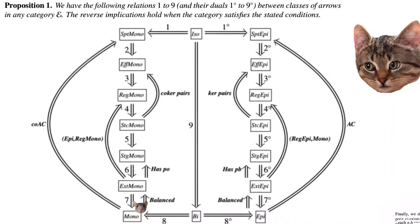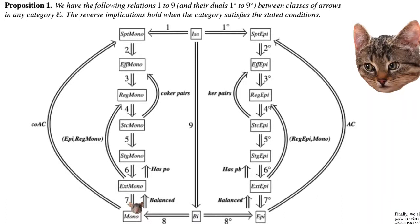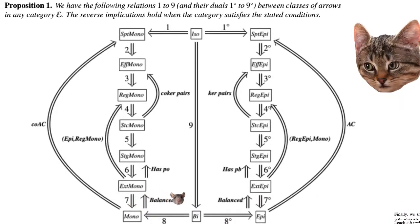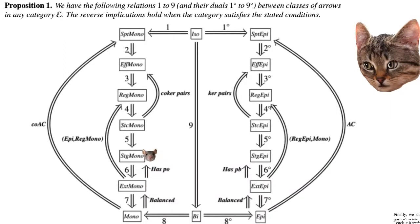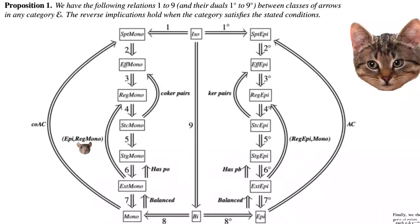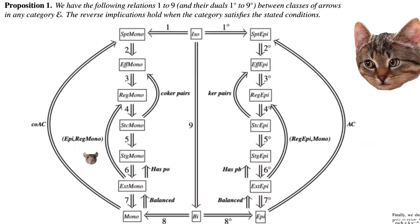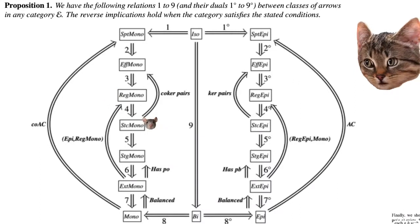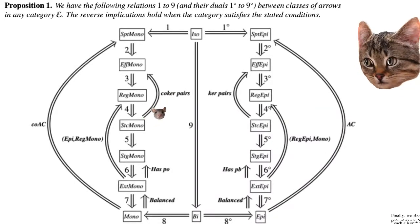Going in the reverse direction, conditional implications flow upward: a mono is extremal mono if the category is balanced; if the category has pushouts, then extremal monos are the same as strong monos; if the category has unique factorizations with epi followed by regular mono, then every extremal mono is regular; and if the category has co-kernel pairs (pushouts of the same arrow), then every strict mono is effective.